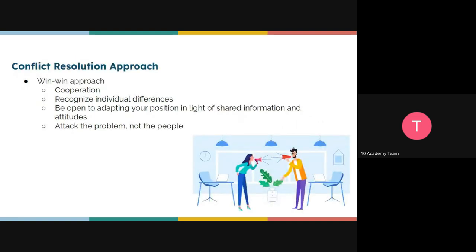Now let's look at some conflict resolution approaches — specifically when the conflict is happening to you. The first is the win-win approach. Why do people battle over opposing positions? The key here is cooperation — you want to win and you want the other person to win too. Let's look at an example: two people in a kitchen, one orange left, and both of them want it. How should they resolve that?